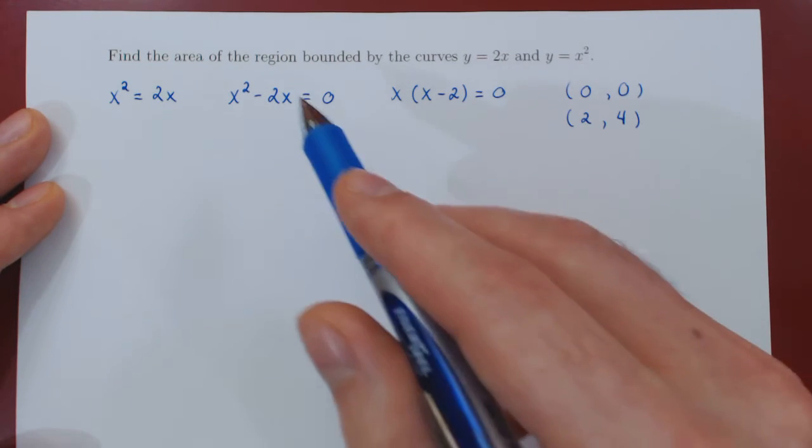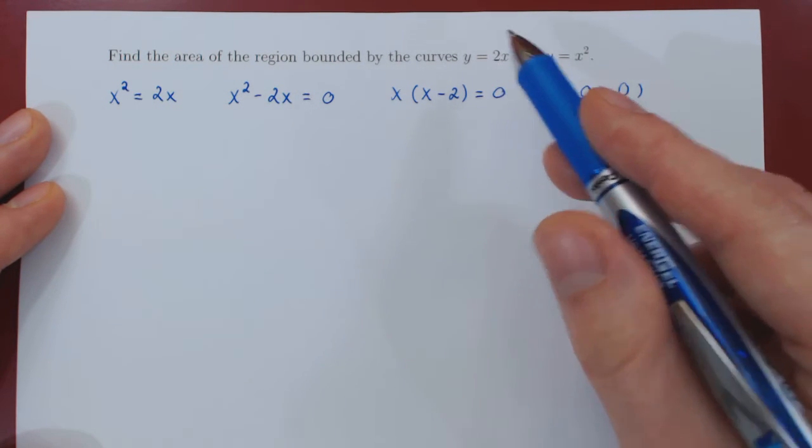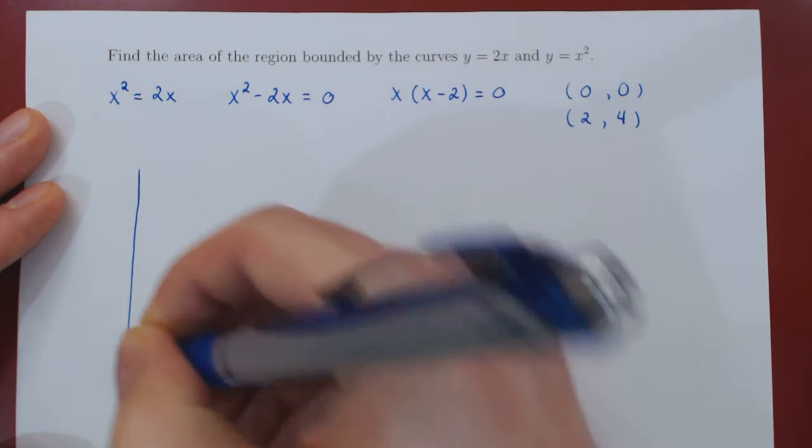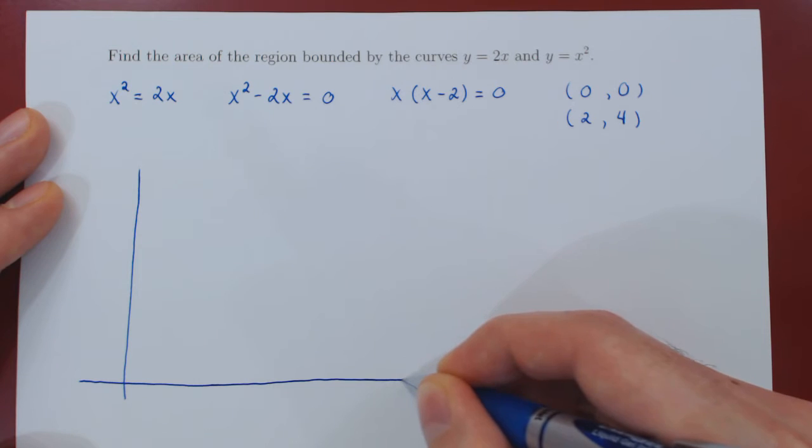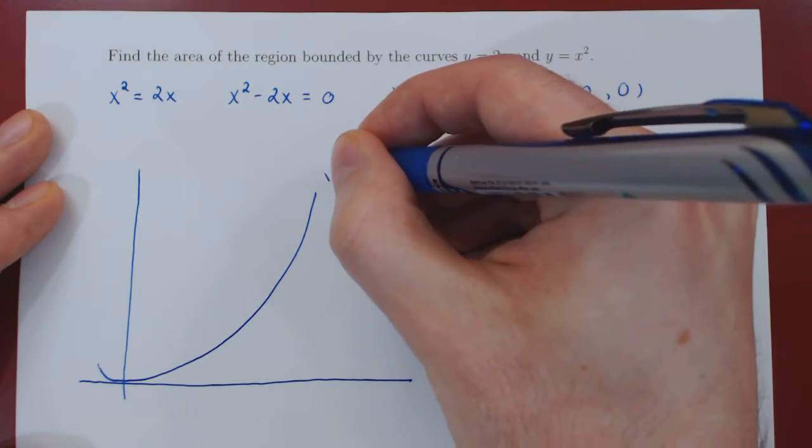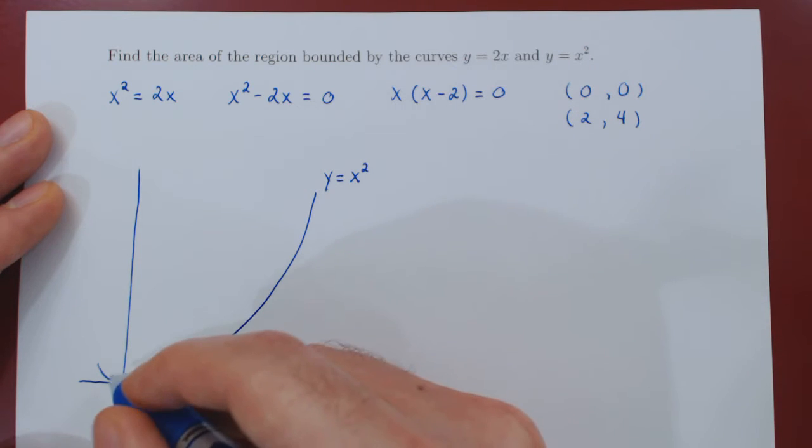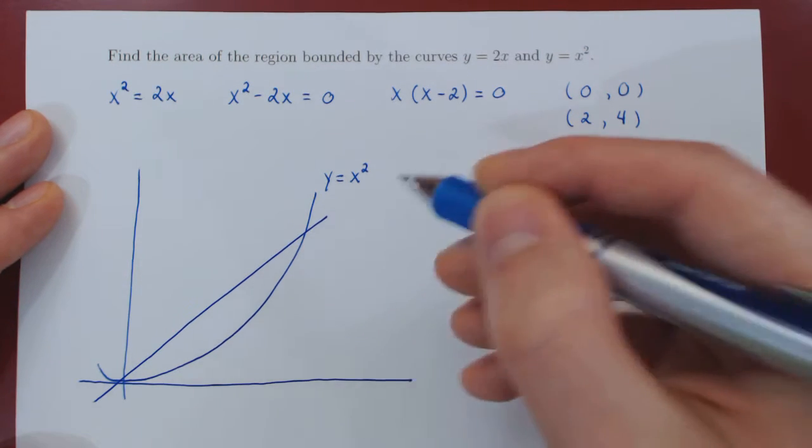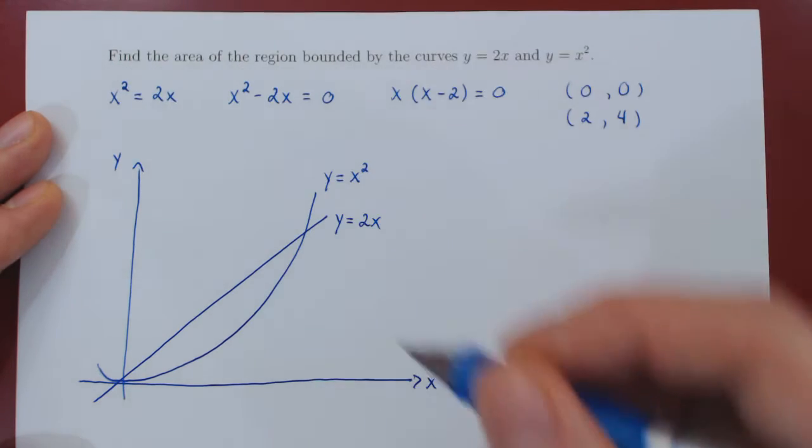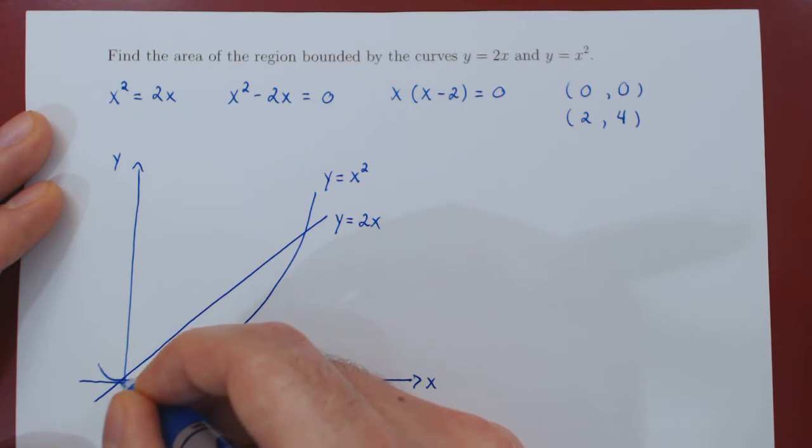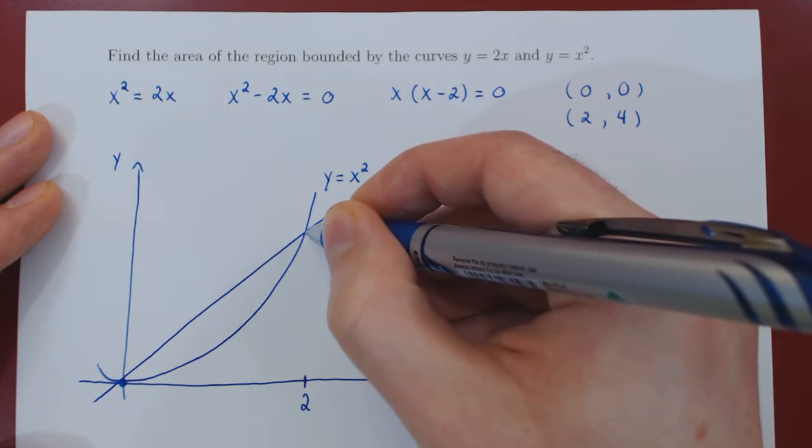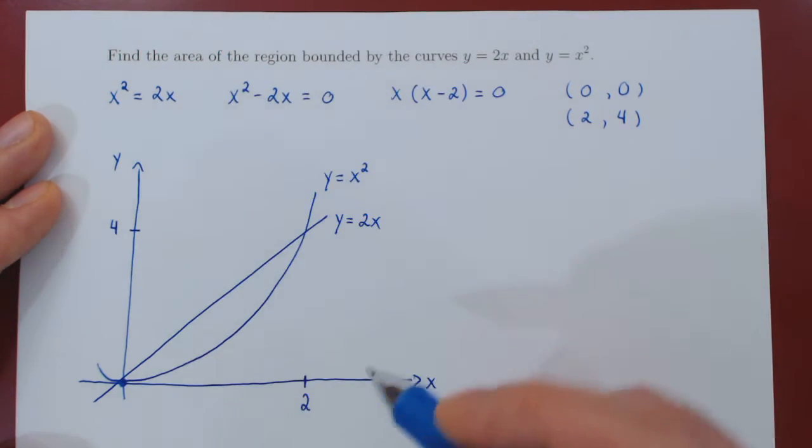And then we can accurately sketch the region bounded by these two curves, given these two points of intersection. So y equals x squared and y equals 2x. So the first point of intersection, 0, 0, so obviously the origin. And the second point of intersection, x equals 2, y equals 4. So now we have the region.